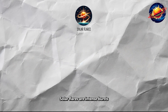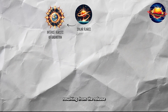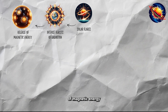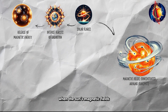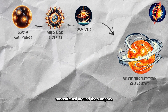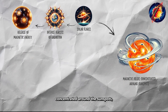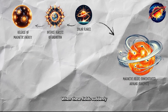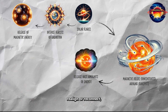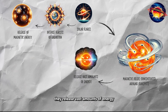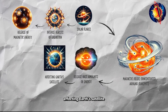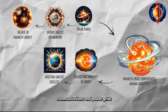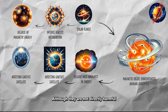Solar flares are intense bursts of radiation resulting from the release of magnetic energy associated with sunspots on the Sun. They occur when the Sun's magnetic fields, concentrated around sunspots, become twisted and unstable. When these fields suddenly realign or reconnect, they release vast amounts of energy across the electromagnetic spectrum, affecting Earth's satellite communications and power grids, although they are not directly harmful to humans on the surface.